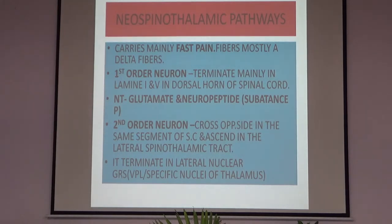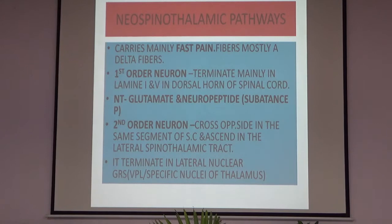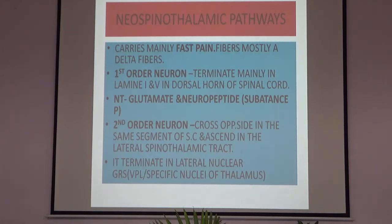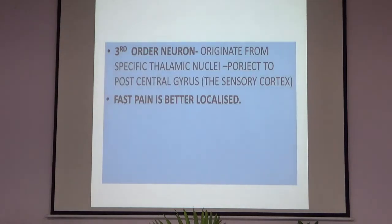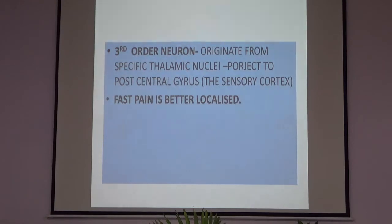The second order neuron terminates in the lateral nuclear group, which is the VPL nuclei — the specific nuclei of the thalamus. In the next class we will discuss all the nuclei of the thalamus. The third order neuron originates from the specific thalamic nuclei and projects to the post-central gyrus, which is the sensory cortex. Fast pain is better localized than slow pain.